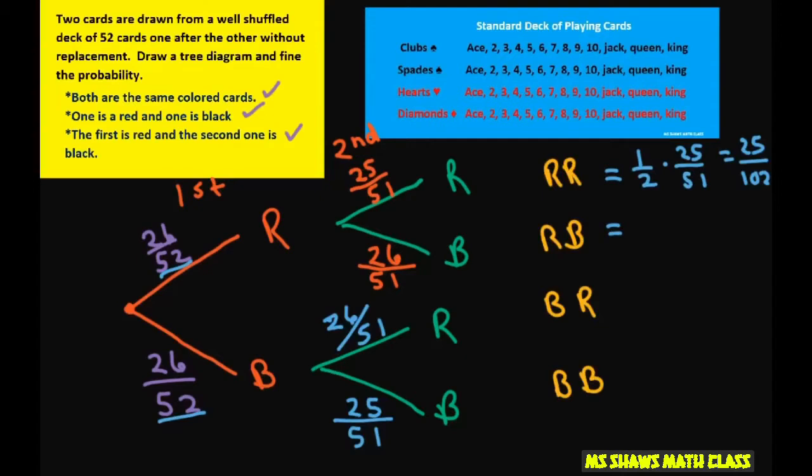This one's going to be one half times 26 divided by 51, which equals 26 divided by 102. And then the black red, or the black black is one half times 25 divided by 102, and then the black red,